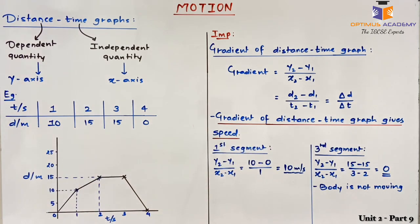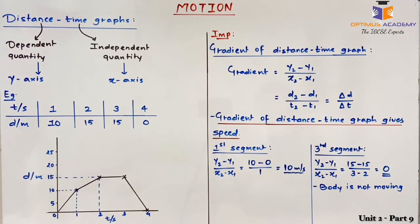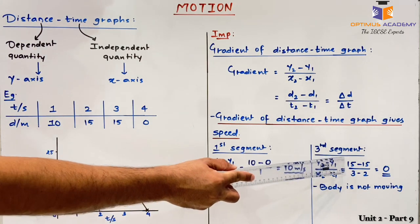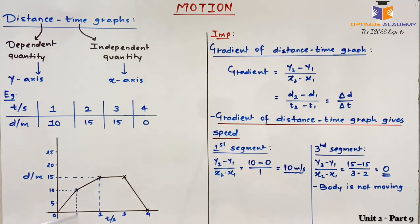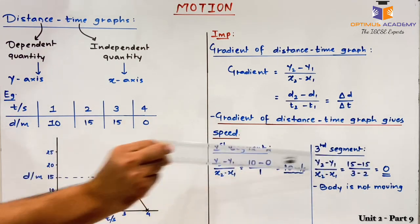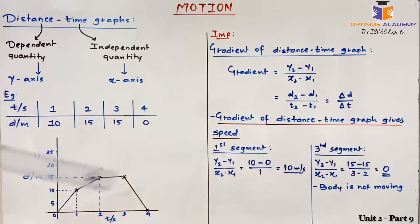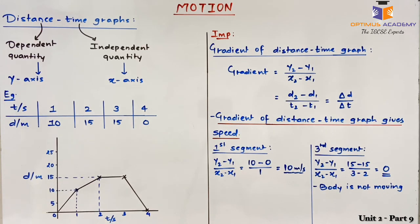Now for the third segment, between 2 and 3 seconds: y2 = 15 and y1 = 15, since the body does not cover any distance in that interval. So the numerator is 15 − 15 = 0, and the denominator is 3 − 2 = 1. The gradient is therefore 0, meaning the speed of the body in the third segment is 0.